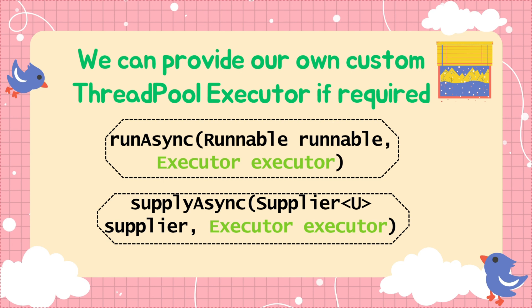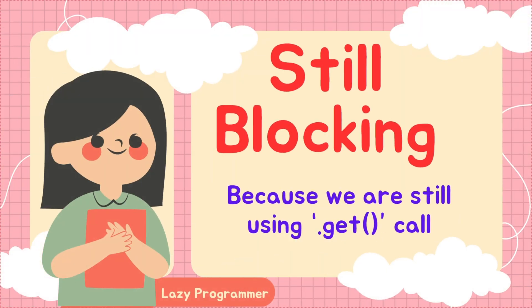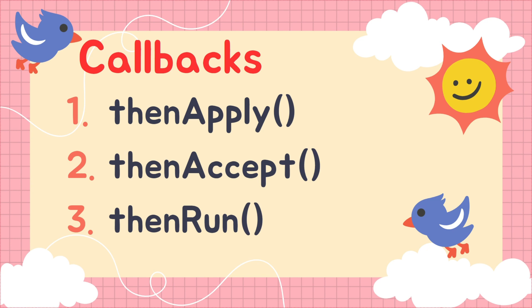These are the most basic operations in CompletableFuture, but we are still using a blocking call — that's not what we wanted. We should be able to add a callback to CompletableFuture that automatically gets called when the future completes, allowing us to write logic that executes after completion. There are mainly three types of callbacks we can assign: thenApply(), thenAccept(), and thenRun(). Each has its own separate use case.